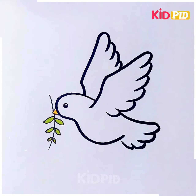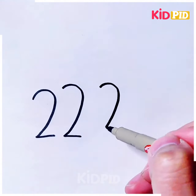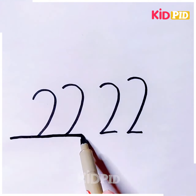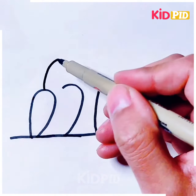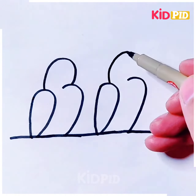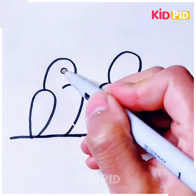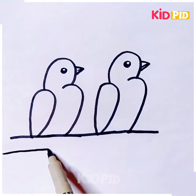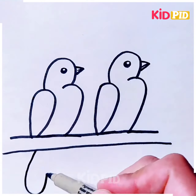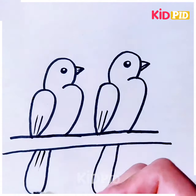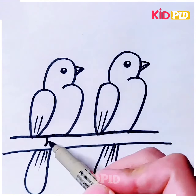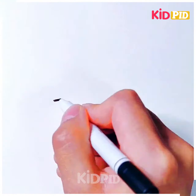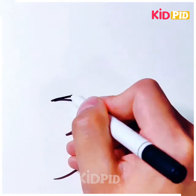Again, go for 2222 and join the bottom parts with a line. Extend the first and third digits on the bottom and have a curve on the top. Draw eyes and a little beak, extend the branch, draw tail feathers, detail the feathers and wings, and draw a tiny little X on the bottom.